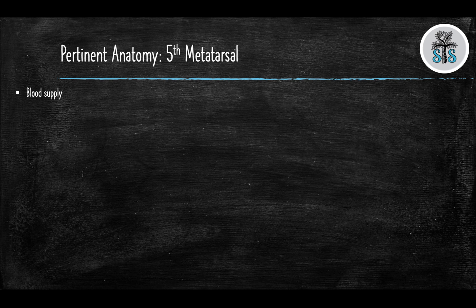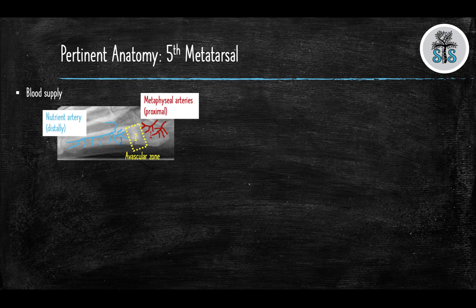The 5th metatarsal is prone to non-unions because there is an avascular zone. The proximal aspect is fed by the metaphyseal arteries, and the mid to distal aspect is fed by the nutrient artery. The area between these two vessels is known as the watershed area. This area coincides with the Jones fracture, which has the highest rate of non-unions. Remember, in orthopedics, blood supply is everything in regards to fracture healing.